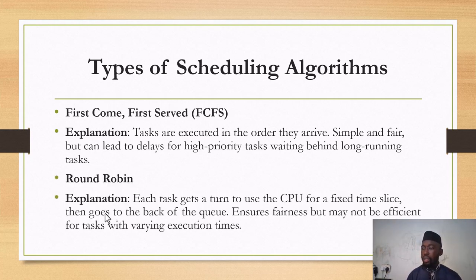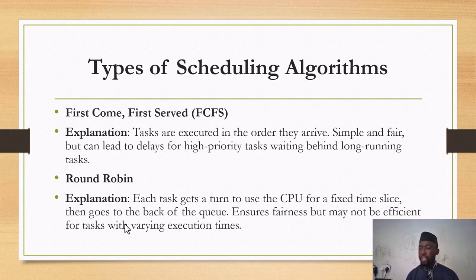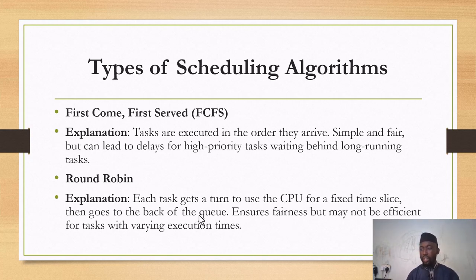Another type is Round Robin. Here, each task gets a turn to use the CPU for a fixed time slice, then goes to the back of the queue. This ensures fairness but may not be efficient for tasks with varying execution times.